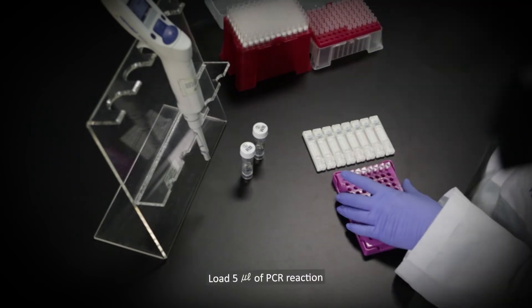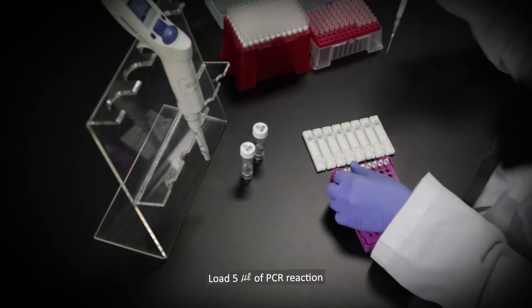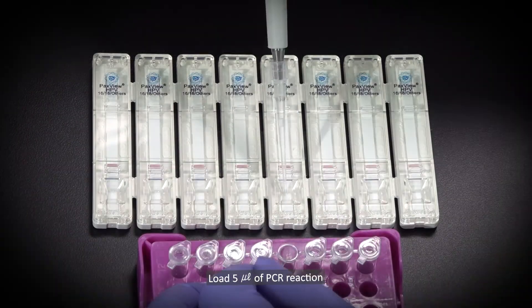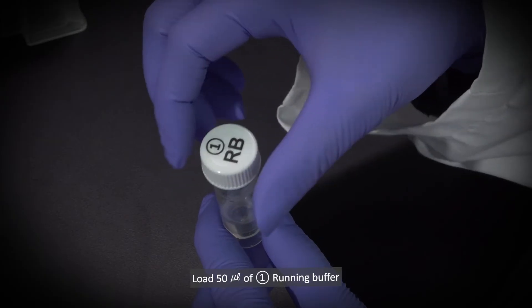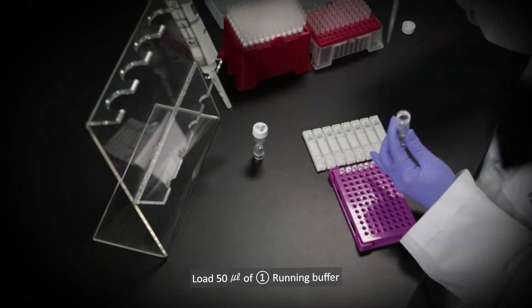5 µL of PCR reaction is loaded into the sample loading well on the Alpha cartridge. 50 µL of running buffer is added to the well.